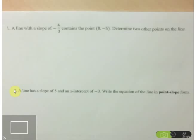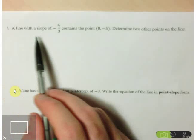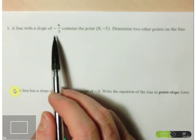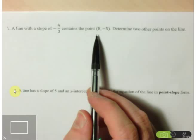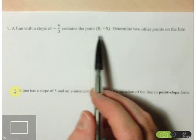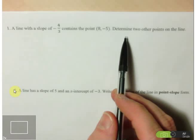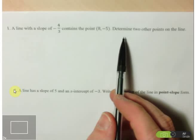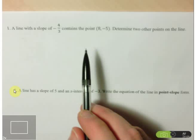Hi folks, we're going to take a look at some of the review questions for the unit 4 test that's coming up. We're going to start with the first three questions from the second review quiz. Question number one gives you a line that has a slope of negative 4 over 3 and contains a point (8, -5), and they want us to determine two other points on the line. There's a long way of doing this — finding the equation first — but there's an easier way.